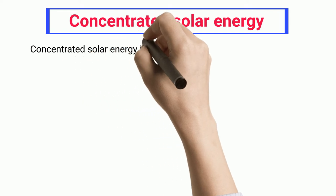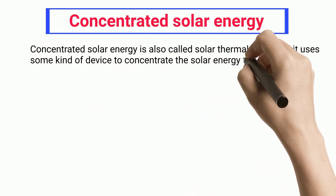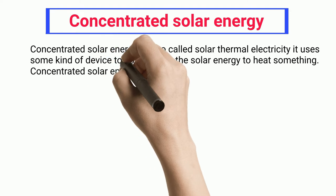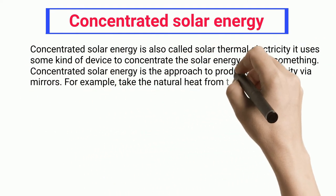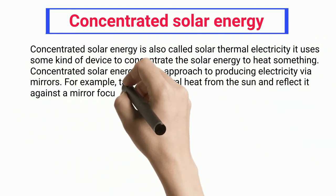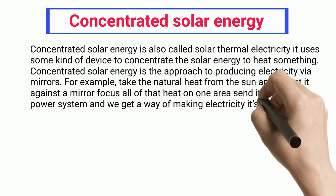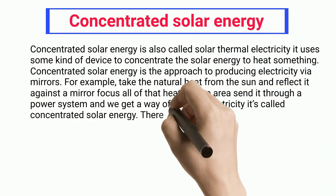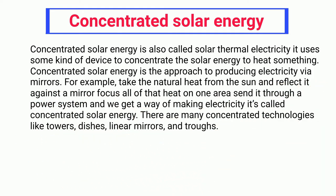Concentrated solar energy, also called solar thermal electricity, uses some kind of device to concentrate solar energy to heat something. It is the approach to producing electricity via mirrors. For example, you take the natural heat from the sun, reflect it against a mirror, focus all of that heat on one area, send it through a power system, and generate electricity — that is called concentrated solar energy.